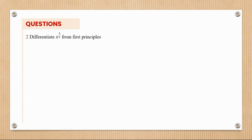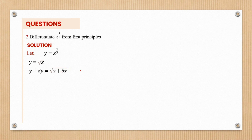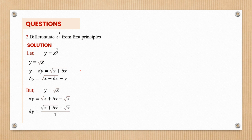Let's look at another example. I've been asked to differentiate x to the power of a half from first principles. I'll let y equal x to the power of a half, which can also be written as the square root of x. Then y plus Δy equals the square root of (x plus Δx). Taking y to the other side, Δy equals root(x plus Δx) minus root(x).